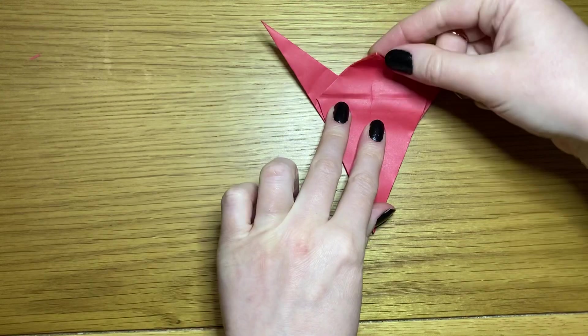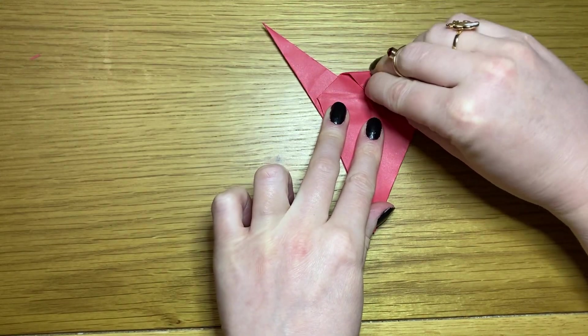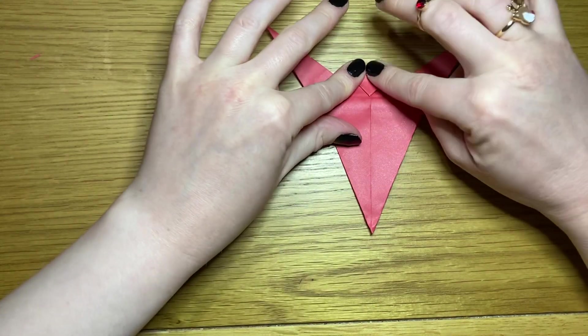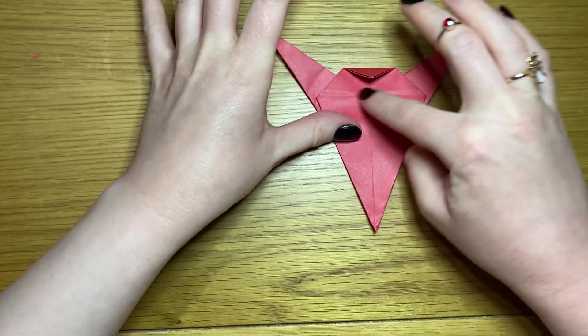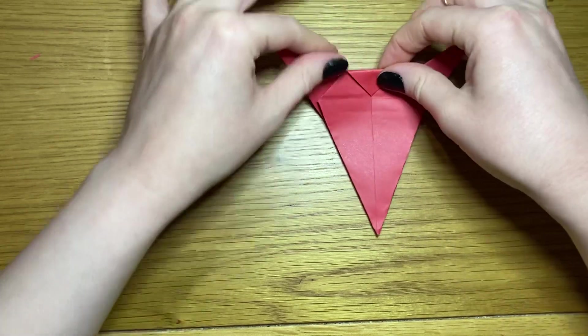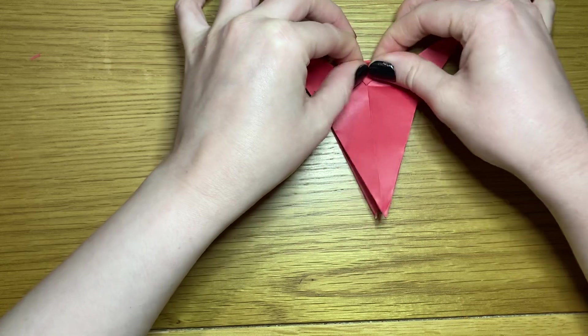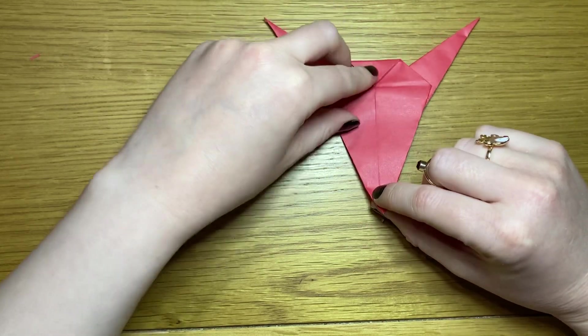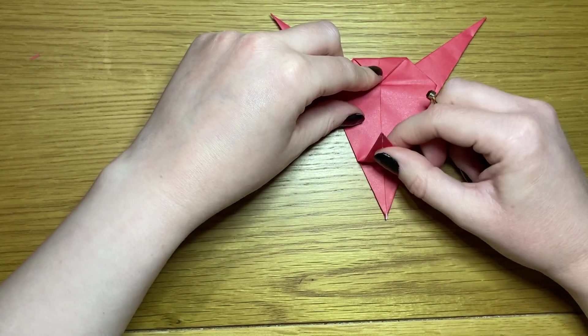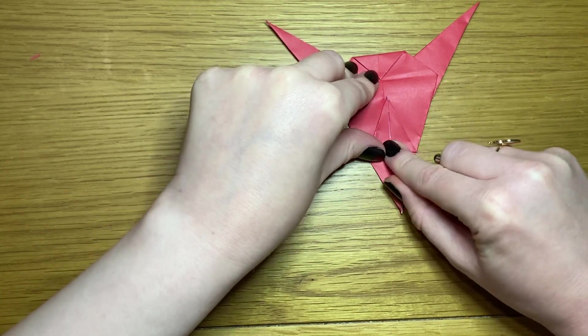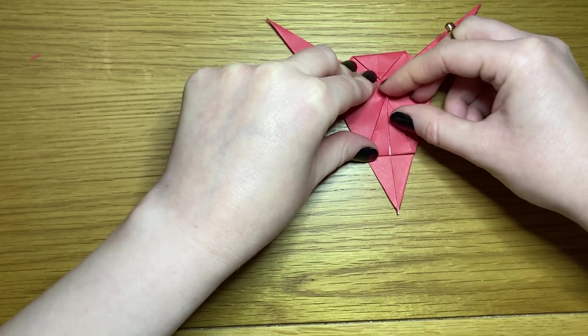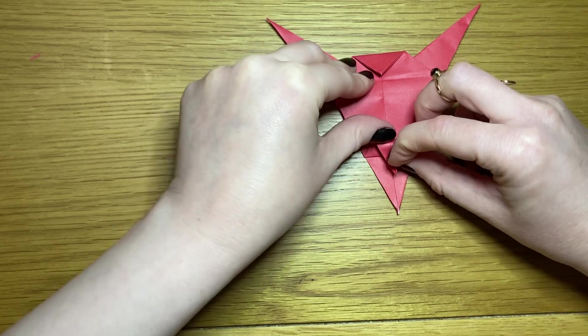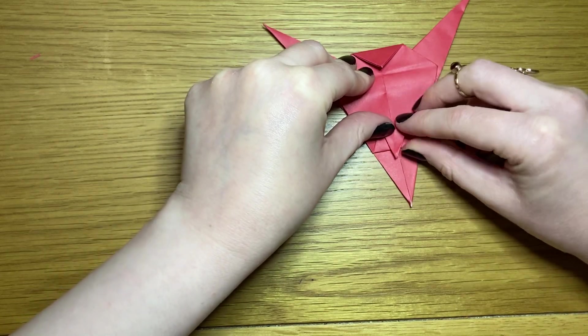Take your triangle and fold it down to meet this fold here. Take the bottom point and bring it up to wherever you want the bottom of your reindeer's face to start. Fold it down to however big you want his nose to be.